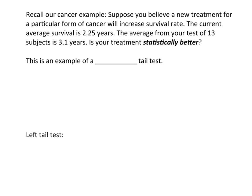Just a couple more things before we actually start calculating hypothesis tests or actually setting them up. So, let's go back to our cancer example. Suppose you believe the new treatment for a particular form of cancer will increase survival rate. The current average survival is 2.25 years. The average from your test of 13 subjects is 3.1 years. Is your treatment statistically better? That's the question we're trying to get to.